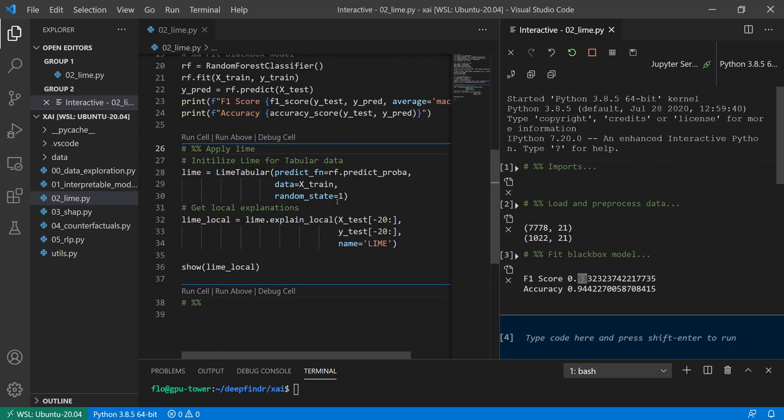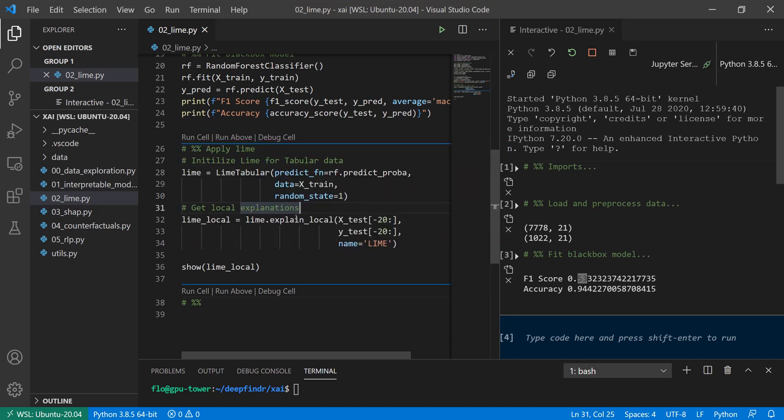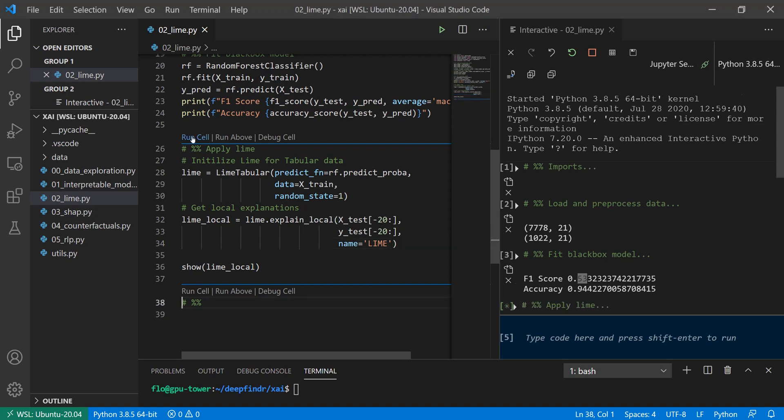And now what we do is we use this LimeTabular class and use our random forest classifier or more specifically the prediction probabilities and pass it our dataset. And what we can do now is we can pass the first or the last 20 instances of our dataset to make LIME explain them locally. And what that does is simply creating those local explanations we've just seen. That means we fit a local model in the area around each of those 20 data points. So let's run this. And this will take some time as we have to fit an entirely new model and also sample a dataset for each of those 20 data points.